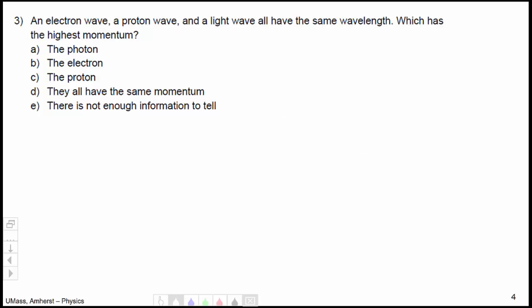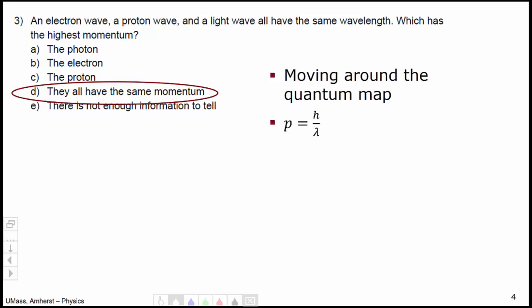Question number 3 was asking about an electron wave, a proton wave, and a light wave, all with the same wavelength, asking which one has the highest momentum. The correct answer is that all three of these particles must have the same momentum. This question involved moving around what I call the quantum map. The key expression is the connection between momentum and wavelength that works for all particles, both matter and light. We can see that since all particles have the same wavelength, they will have the same momentum.